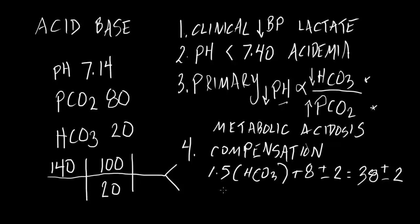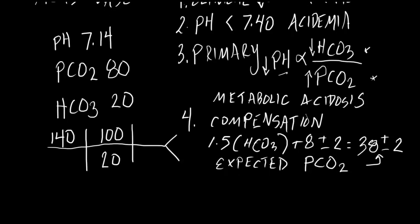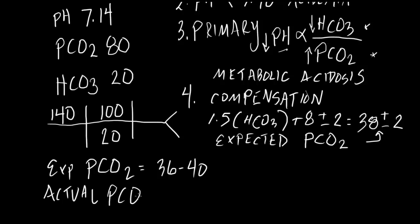This is, of course, our expected pCO2. Our expected pCO2 is in the range of 38 plus or minus 2. What is our actual pCO2? Our actual pCO2 is 80. So, our expected pCO2 is 36 to 40, our actual pCO2 is 80.